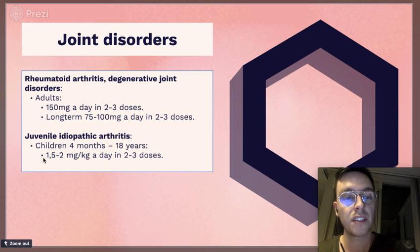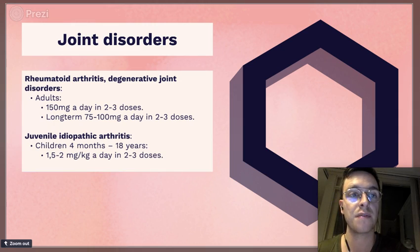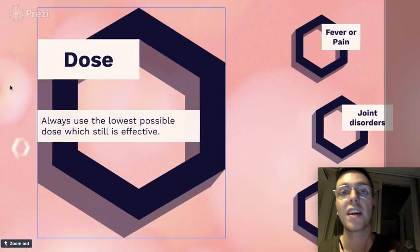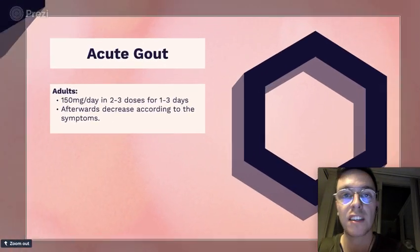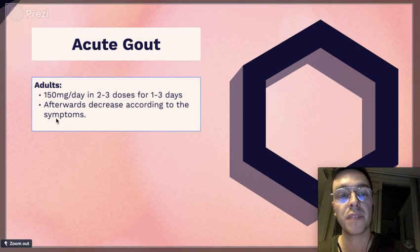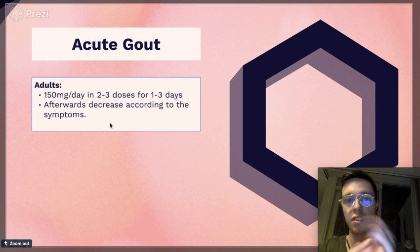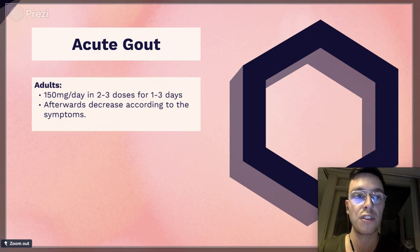For children, if you're using Diclofenac for juvenile idiopathic arthritis, the correct dose would be 1.5 to 2 milligrams per kilogram a day divided over two to three doses. Lastly, if you're using Diclofenac in an acute gout attack, you can use 150 milligrams a day divided over two to three doses for one to two, three days, and afterwards if your symptoms are decreasing, you can also decrease the dose you need.